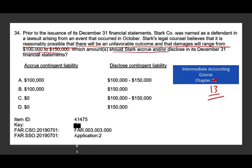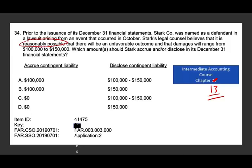You have to know these rules by heart — they are very easy to remember. If it is reasonably possible, there is no accrual. Therefore options A and B are out because we don't accrue anything when it is reasonably possible. We're down to C and D. We have a range from $100,000 to $150,000 — we will disclose that range. So the answer is C: we don't accrue anything, but we disclose the range.